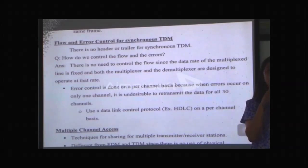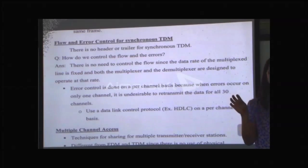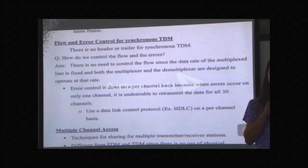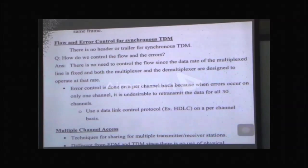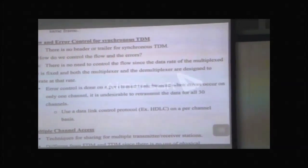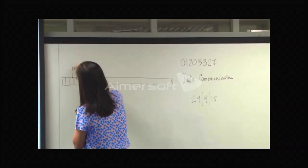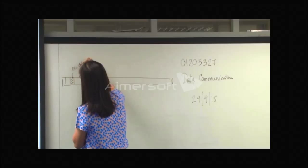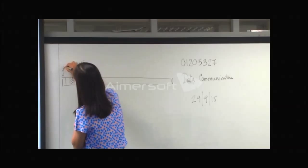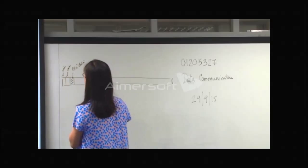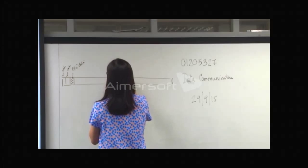For error control in synchronized TDM, we can have multimedia in the same frame — channel one may send an image, channel two may send voice, channel three may send a data file. Some of them may need error control and some may not, depending on the users. So we let the user decide whether to use error control. For example, channels sending voice may not need error control, but a channel sending data does need error control.